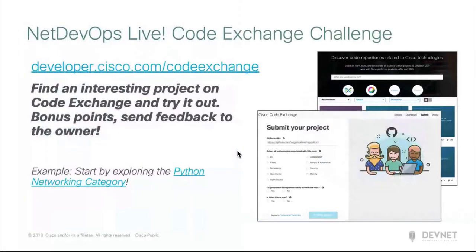I always have a Code Exchange challenge, and I'm doing something a little different today. Rather than building something your own, go explore the library of resources already on Code Exchange. Find an interesting project, download it, try it out, and for bonus points send feedback to the owner. The NetDevOps community only grows because of the love and help we give each other — sometimes people are out here coding wondering if anybody will ever look at their code. Go try a project, send feedback, give an open issue that's just a thank you. If you're looking for a place to start, check out the Python networking category — one of the bigger ones on Code Exchange with lots of good projects.